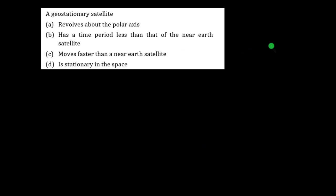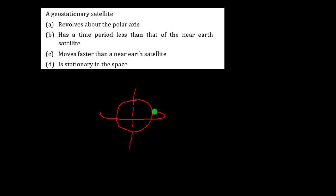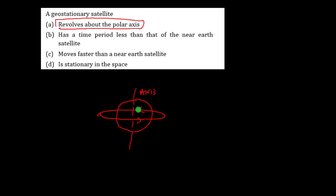These are pretty straightforward questions. A geostationary satellite revolves about the polar axis. This is earth and these are the axes — the geostationary satellite revolves in the equatorial plane about the axis. It is not stationary in space; it moves but appears to be stationary. It revolves about the polar axis, which is the correct option.